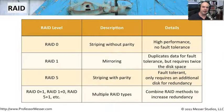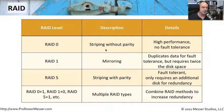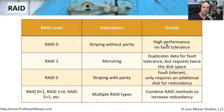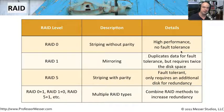RAID, the redundant array of independent disks inside a single server, comes in different types. RAID 0 is striping without parity — parts of files are written across multiple disks simultaneously for very high performance. However, there is no parity, which means if you lose any one of those disks, the entire system is unavailable. So there is no fault tolerance associated with RAID 0 at all.